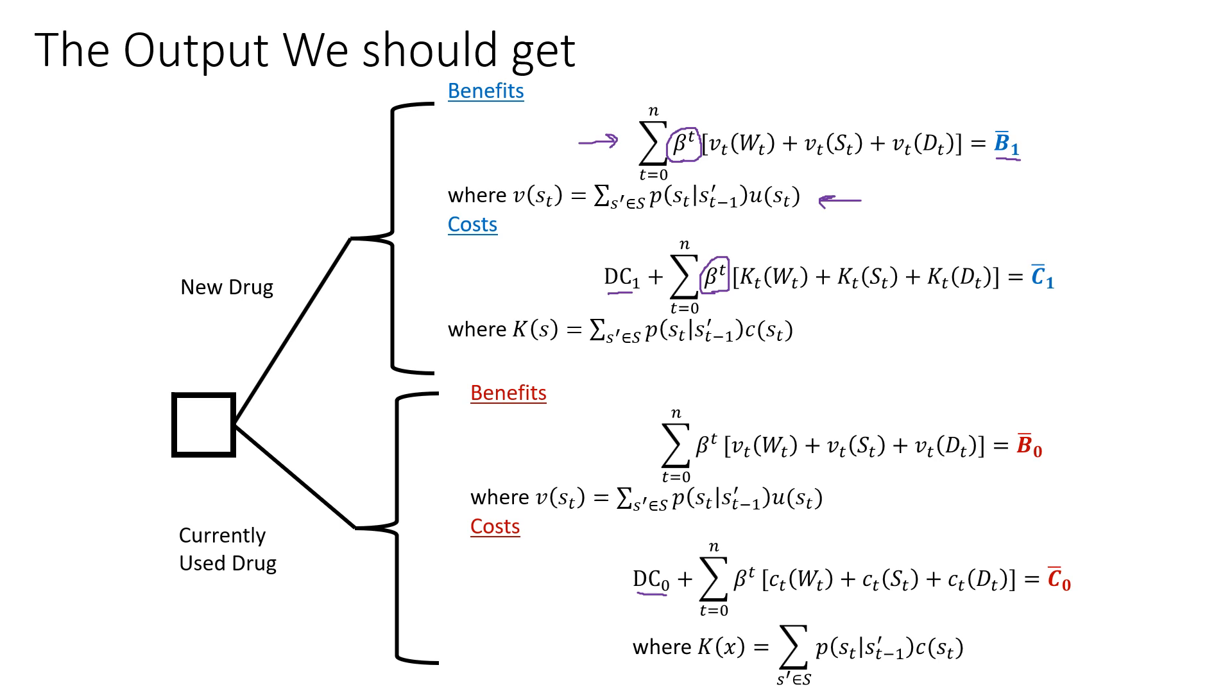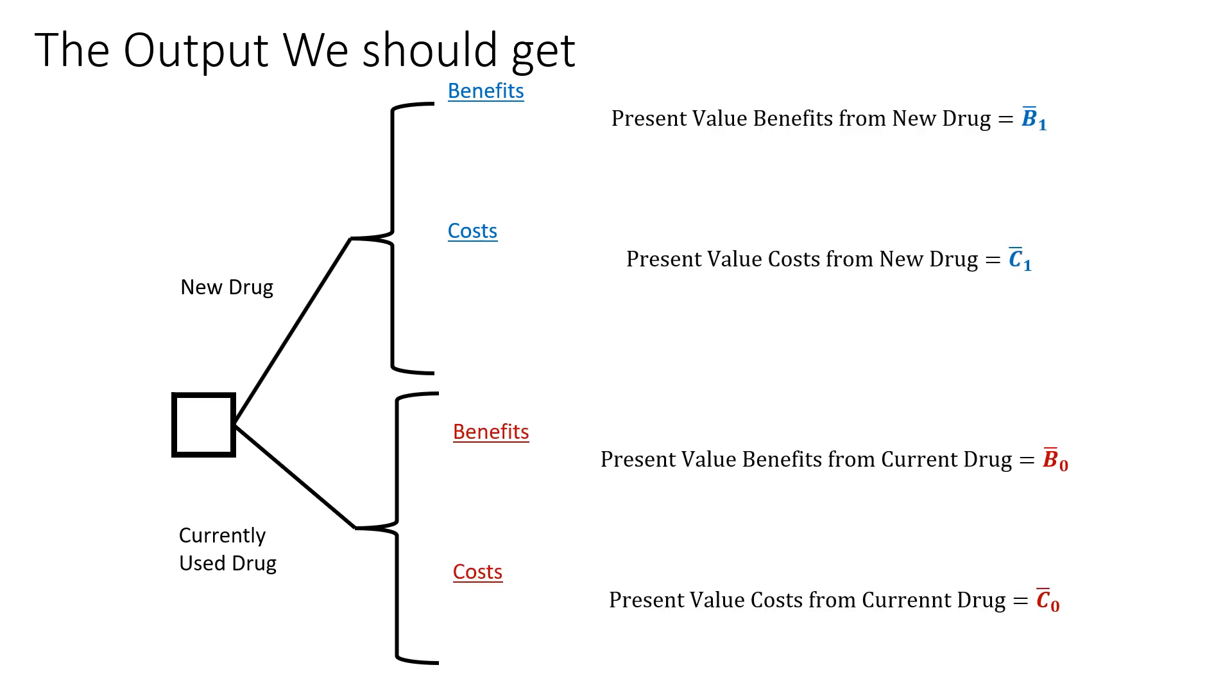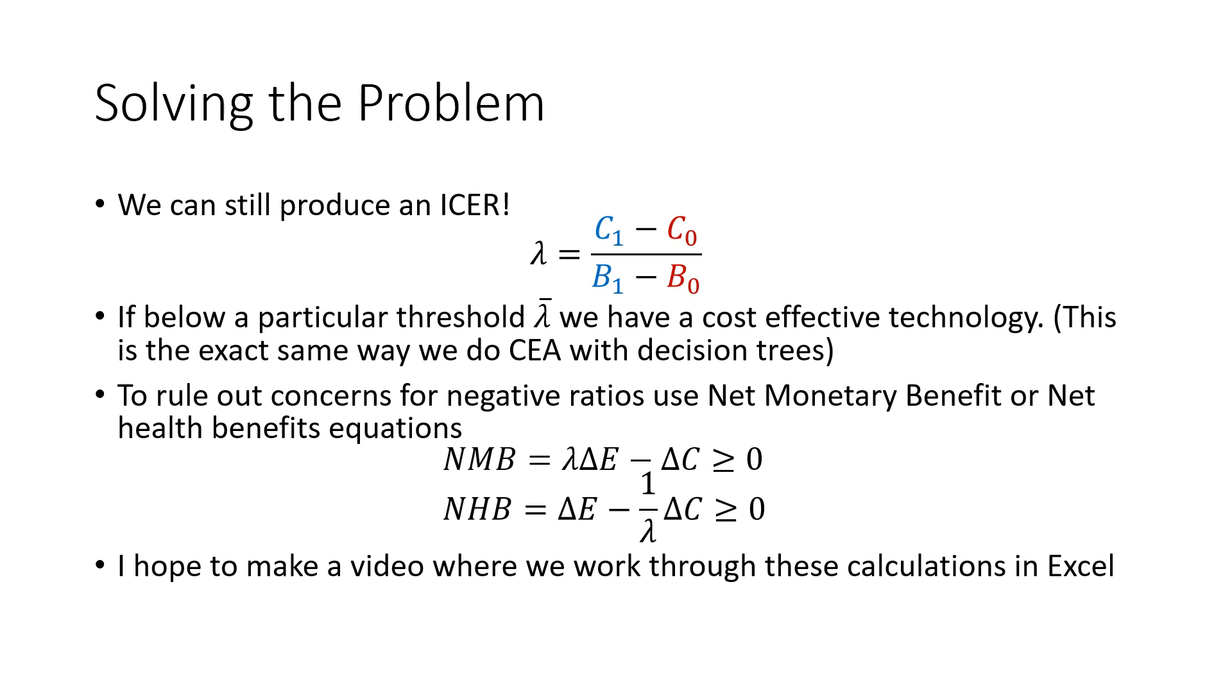From these, we're able to pull out our values for our benefits in each one of these equations and our costs in each one of these equations. Now we are ready to go. This is the slide that summarizes it all. In terms of solving this problem, we produce a CE ratio—an ICER. If this value lambda is below a particular threshold lambda bar, we have a cost-effective technology. To rule out concerns of negative ratios, the standard practice is to use the net monetary benefit or net health benefit equations. Either one has to be greater than or equal to zero. I hope to make a video where we work through these calculations in Excel.